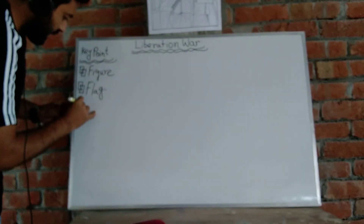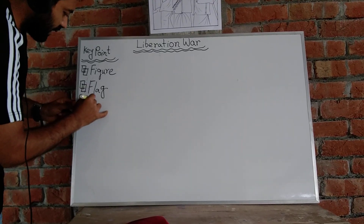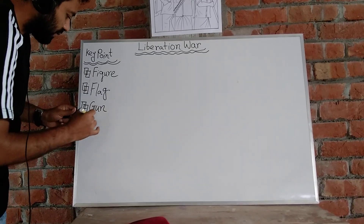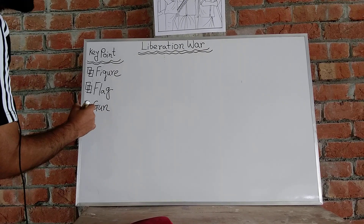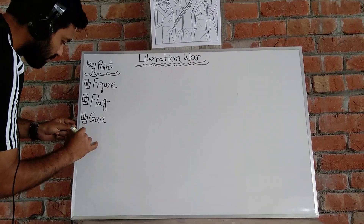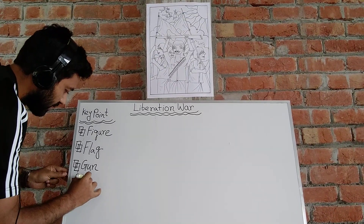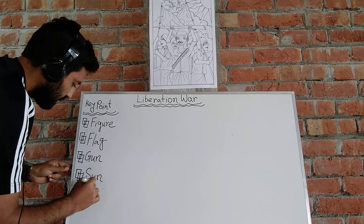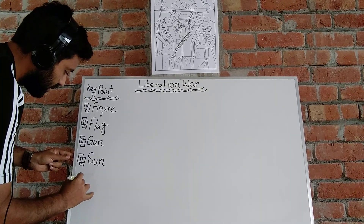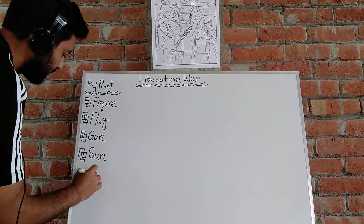After that, gun is another element. Next is sun, and also some birds. So these are our key points for this drawing.